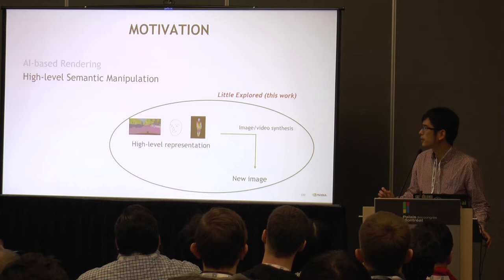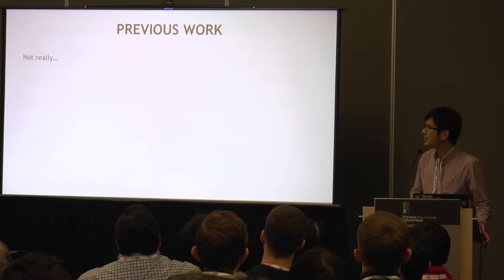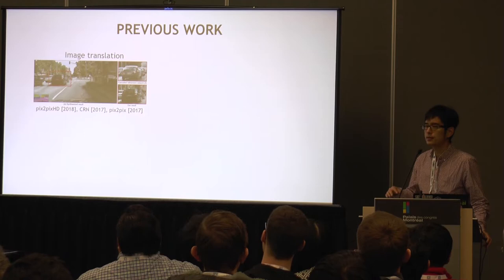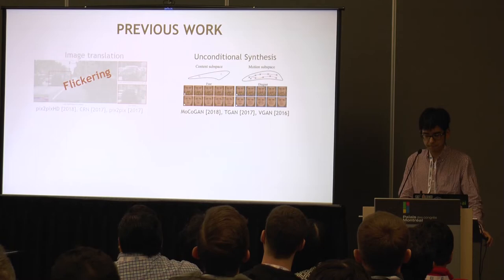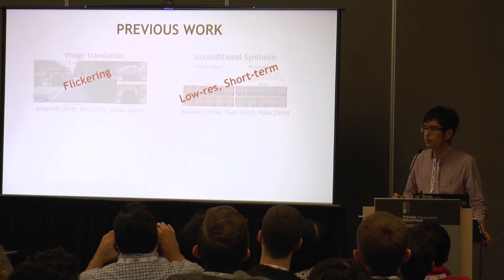Let's look at some previous work for video-to-video translation. There's not really much of it. The first is image-to-image translation, which translates images instead of videos. However, it contains a lot of flickering artifacts in the output video, so it does not suit our need. The second is unconditional video synthesis, which turns a random noise vector into a video. However, the output video is usually very low resolution and very short. So again, it does not suit our need.